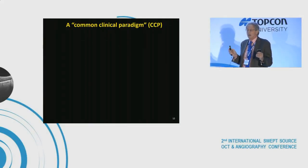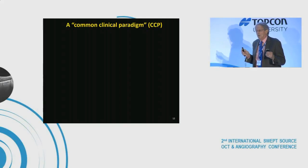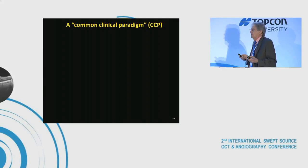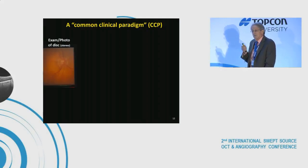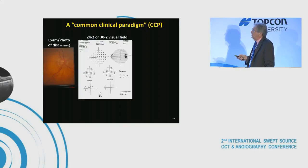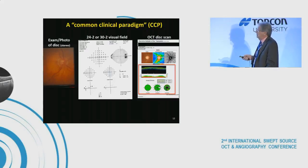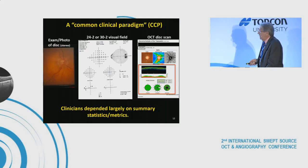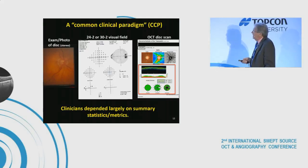The most common clinical paradigm worldwide is: fundus exam with disc photos, a 24-2 or 30-2 visual field with 6-degree spacing, and an OCT disc scan. Clinicians often rely heavily on quadrant statistics and average thickness metrics from the OCT.